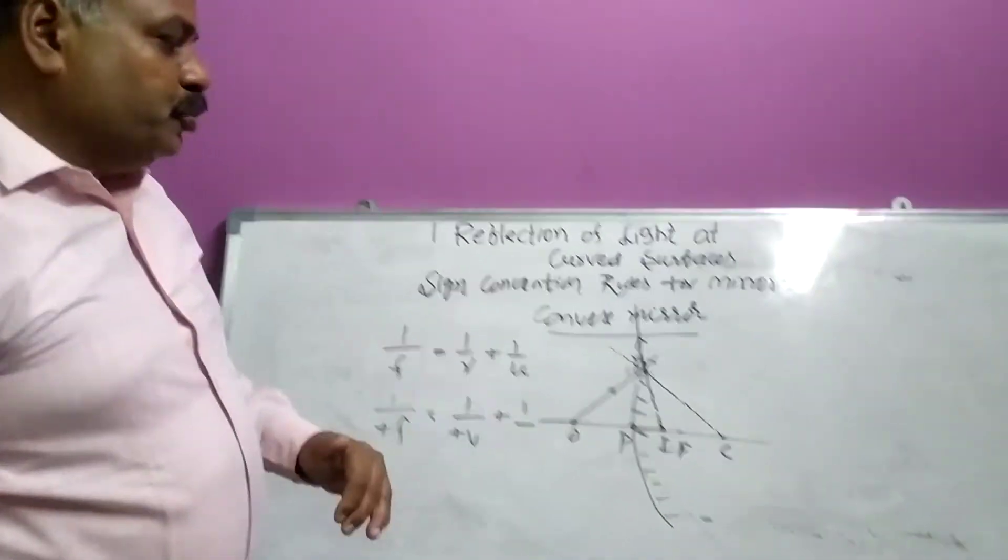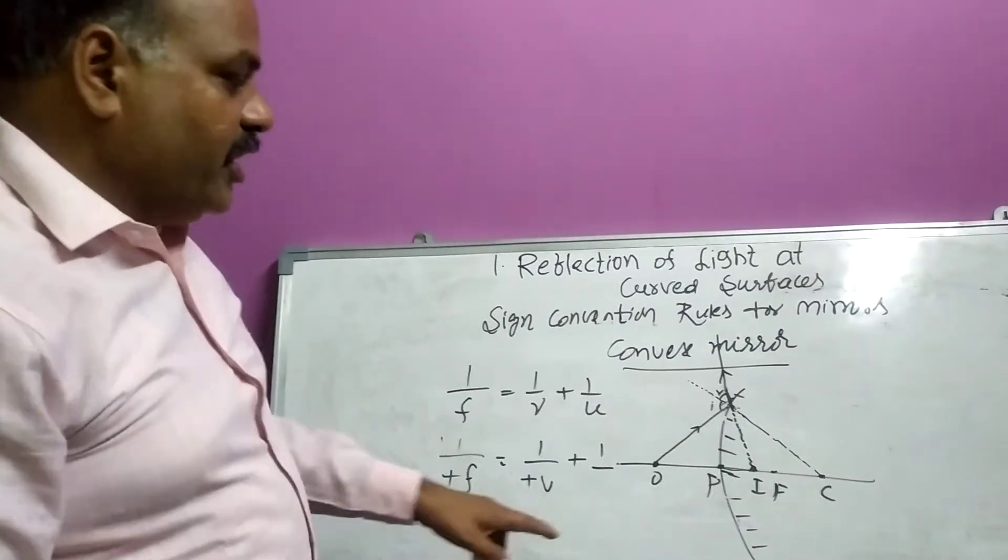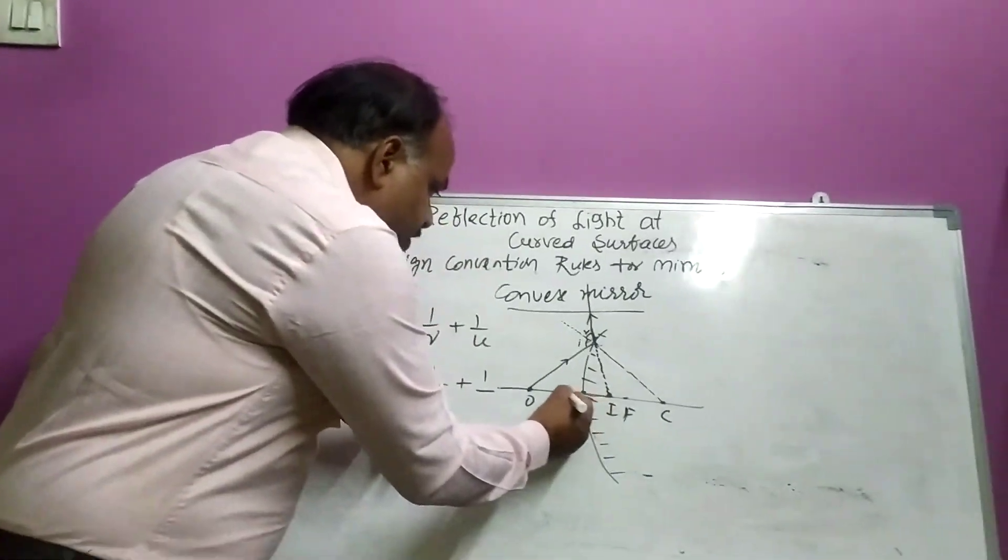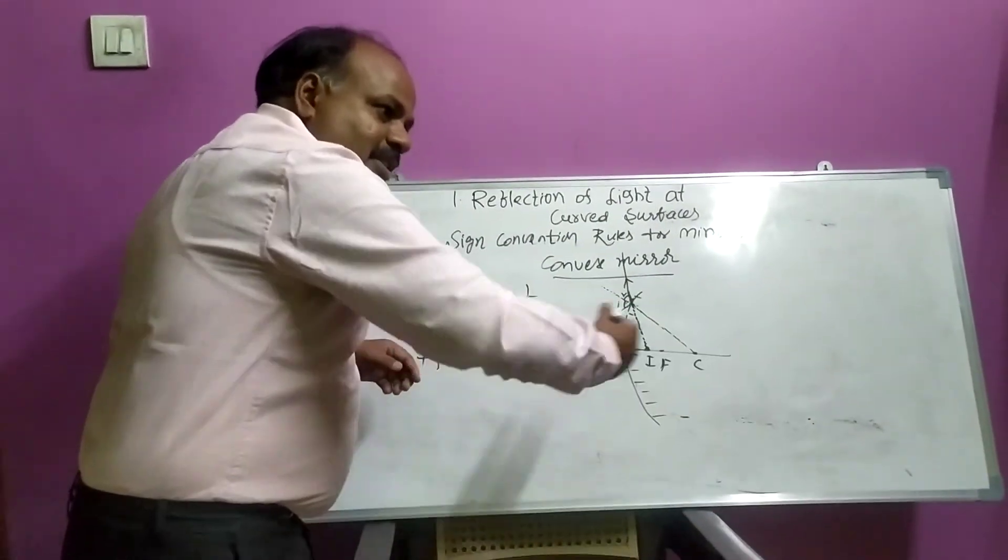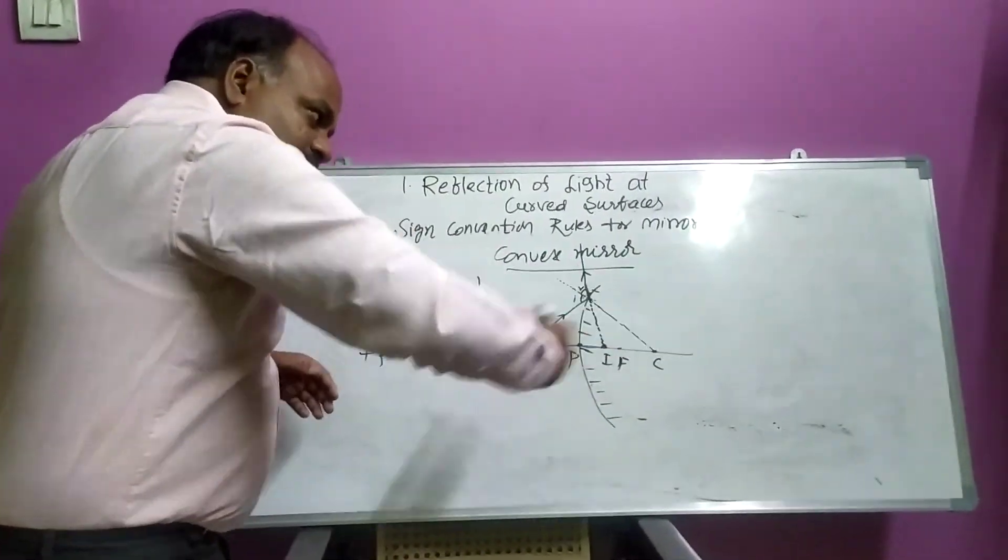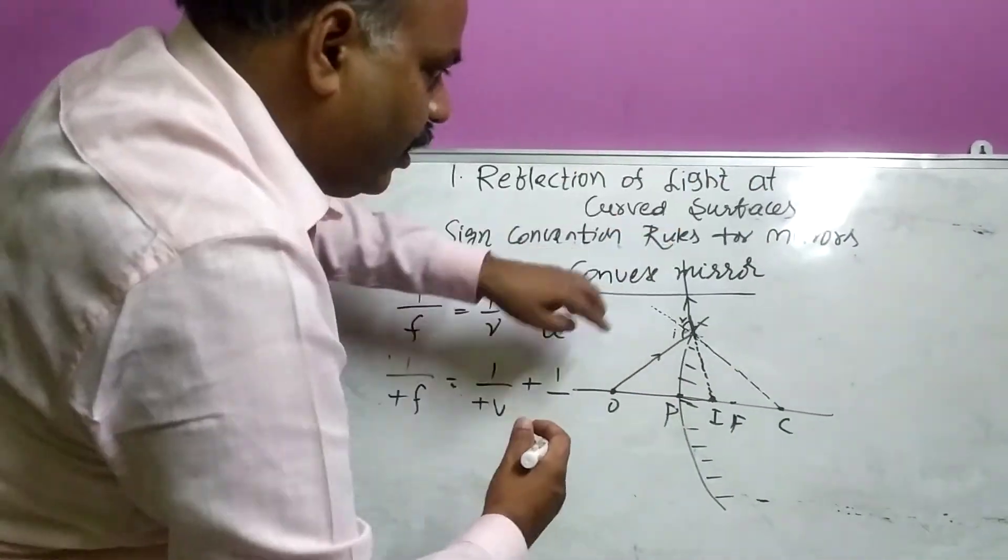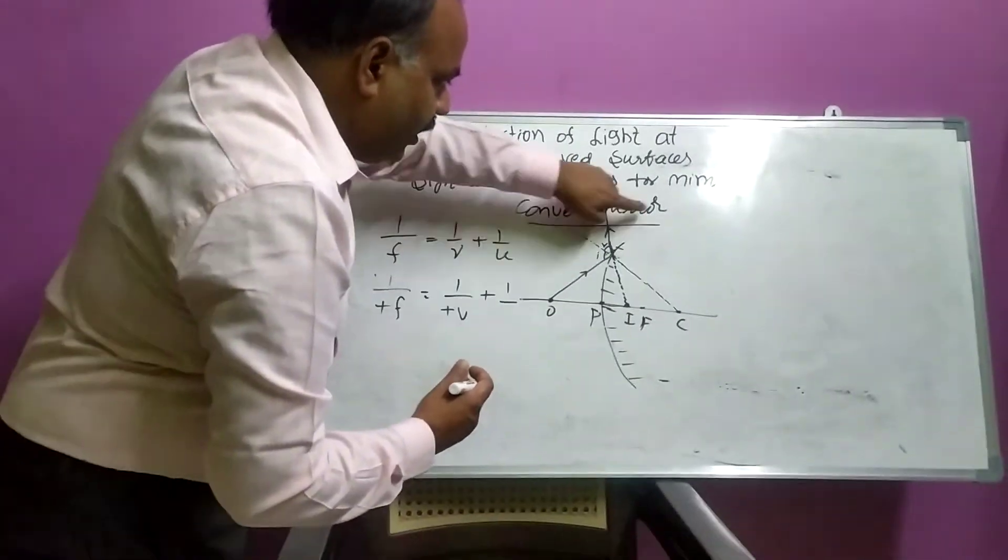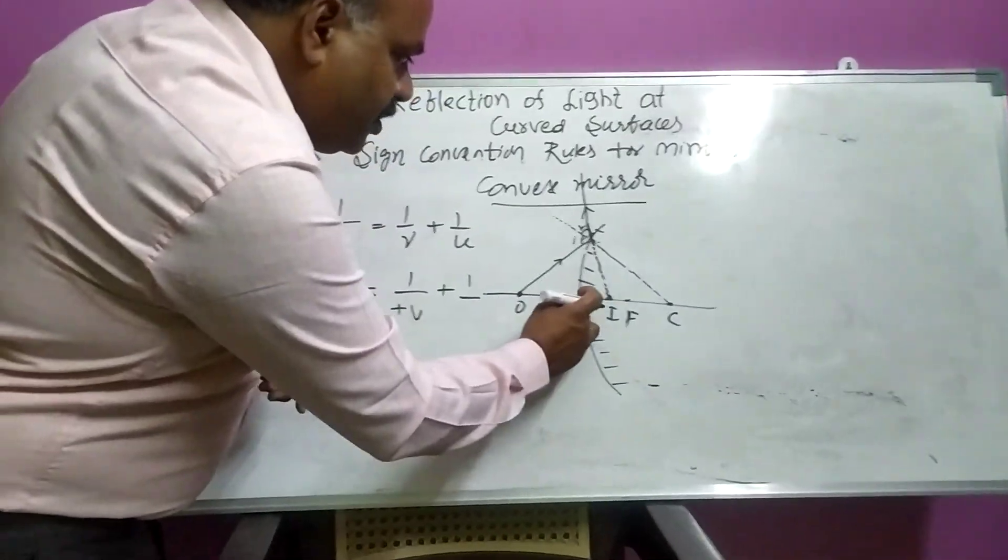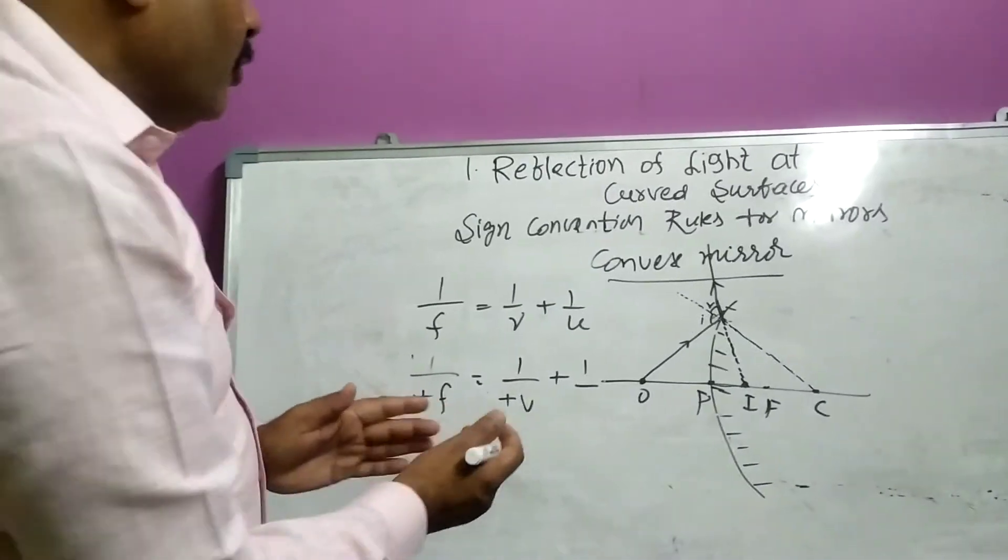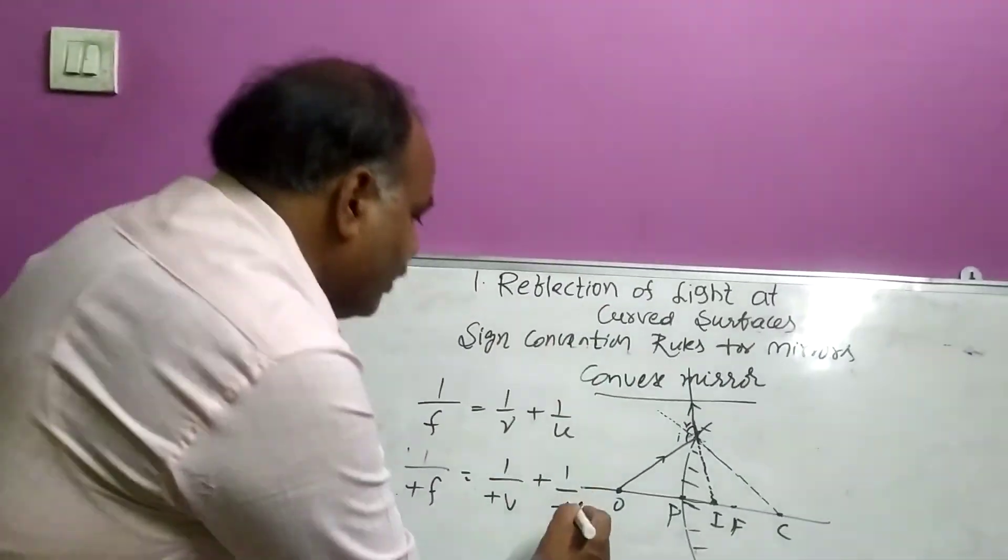Plus 1/U. U means object distance. Where is object? Here it is object. From pole you measure this distance. Object distance is in this direction. Incident ray is in this direction. See my dear friends, both incident ray direction and object distance direction, both they are opposite. So that's why it is taken as minus.